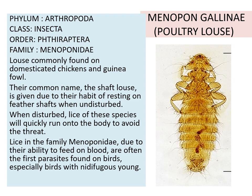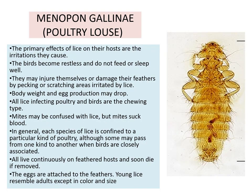When disturbed, the lice of these species will quickly run onto the body to avoid the threat. The lice in the family Menoponidae, due to their ability to feed on blood, are often the first parasite found on birds, especially birds with nidifugous young. The primary effects of lice on these hosts are the irritation they cause. The birds become restless and do not feed or sleep well. They may injure themselves or damage their feathers by pecking or scratching areas irritated by the lice. Body weight and egg production may drop.